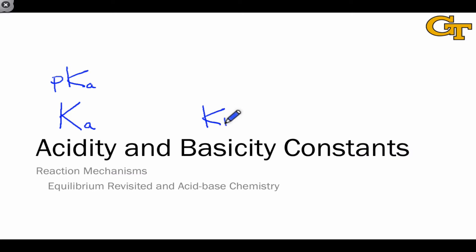And Kb, which is the basicity analog, which also has an analogous value pKb, which is a lot more human-friendly than Kb itself. In this video, we're going to formalize our definitions of these terms and recall how they were defined in introductory chemistry.